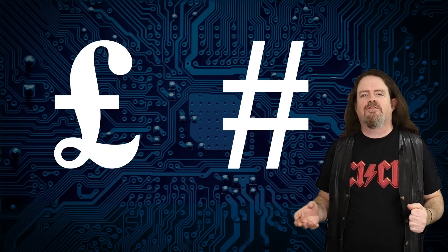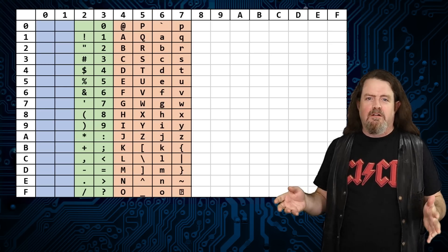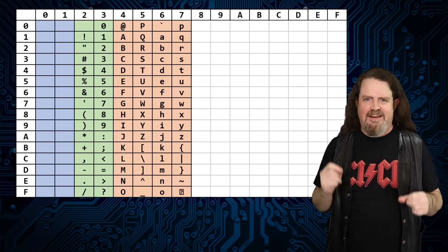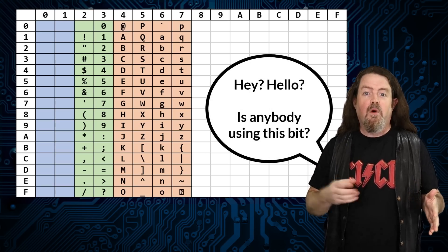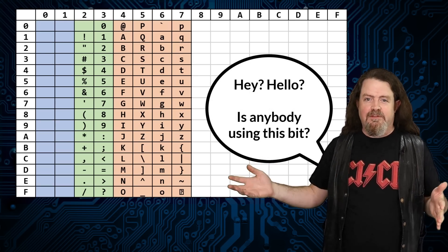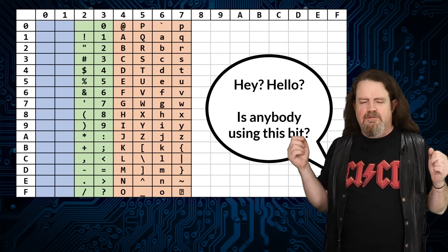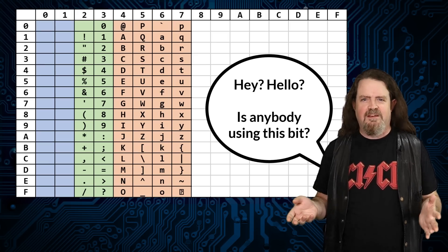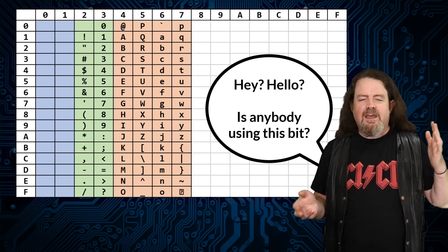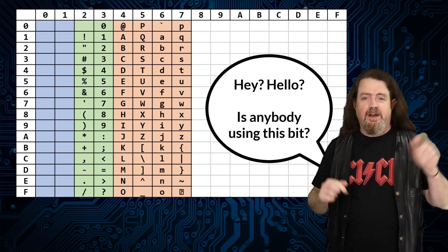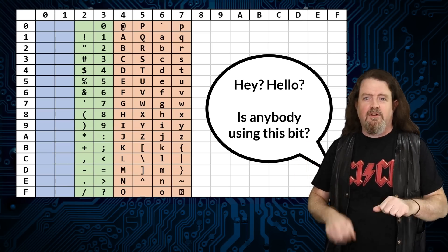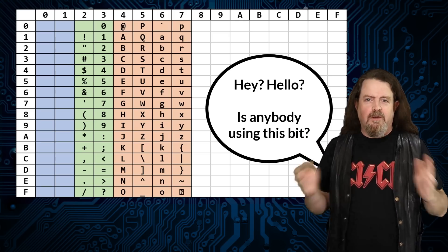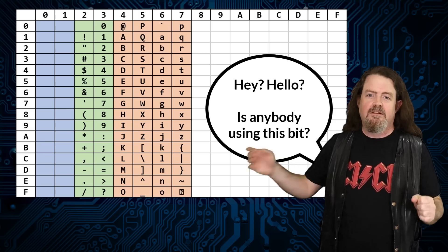And so what happened next is a whole bunch of people all over the world looked at ASCII and went: hang on, there's eight bits in a byte, and ASCII only uses seven of them. What about this part? Is anybody using this? And so we enter one of the most gloriously chaotic epochs in the history of computing: code pages. A code page basically says that right here, right now, on this device, when this document is open in this application, here is what all the codes in the top half of the extended ASCII character set look like.